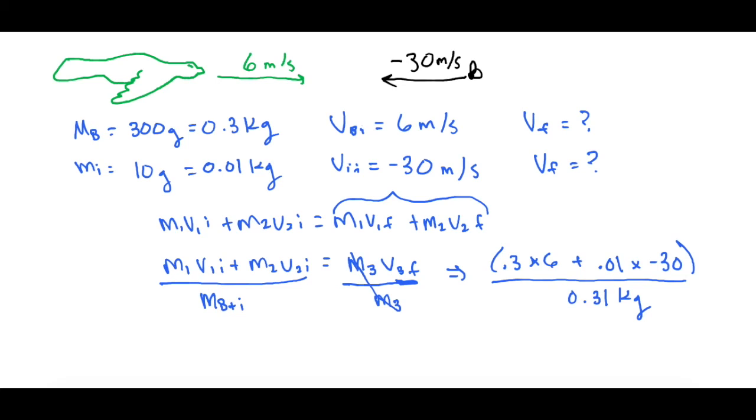Okay so now when we do that, if we plug it in we get 5.03 meters per second which is the final velocity of the bird and in this case the insect.